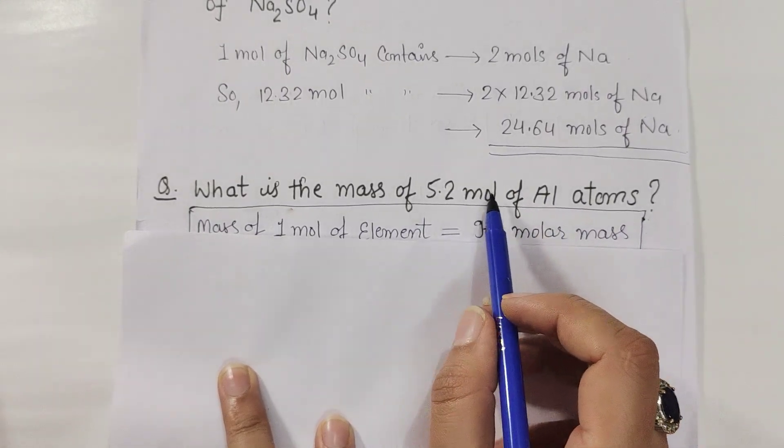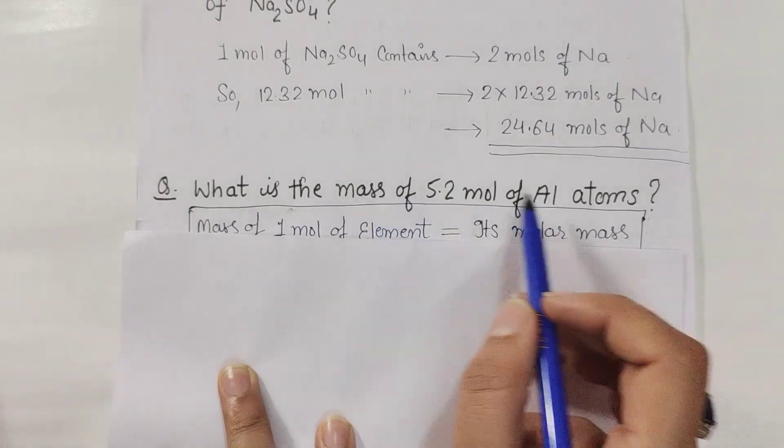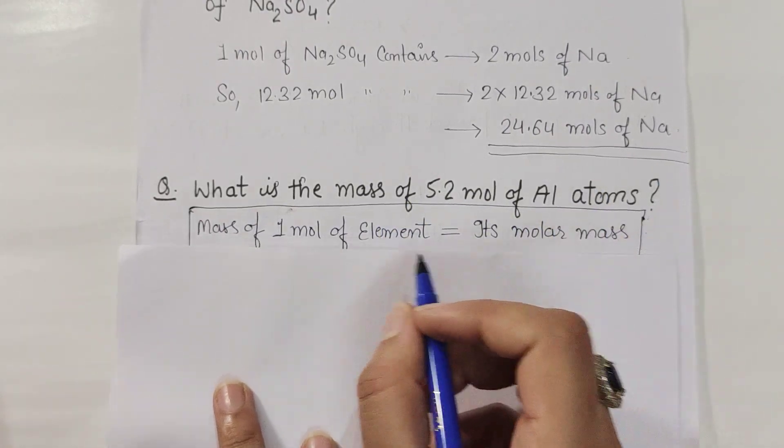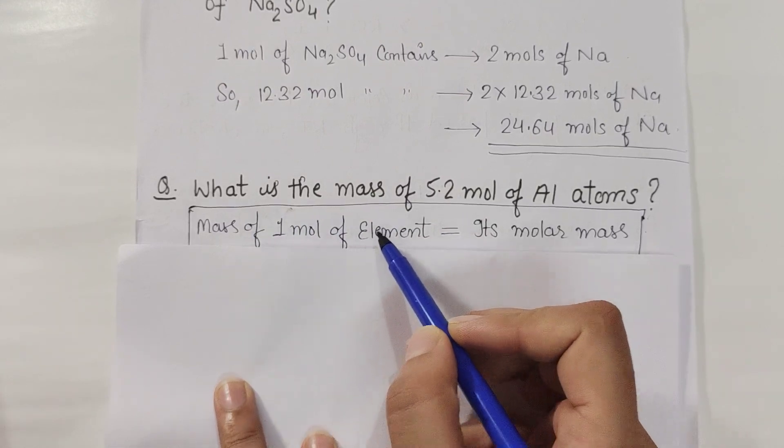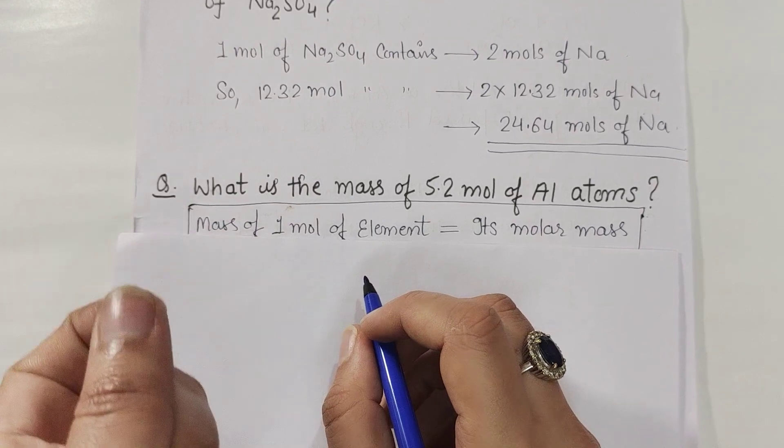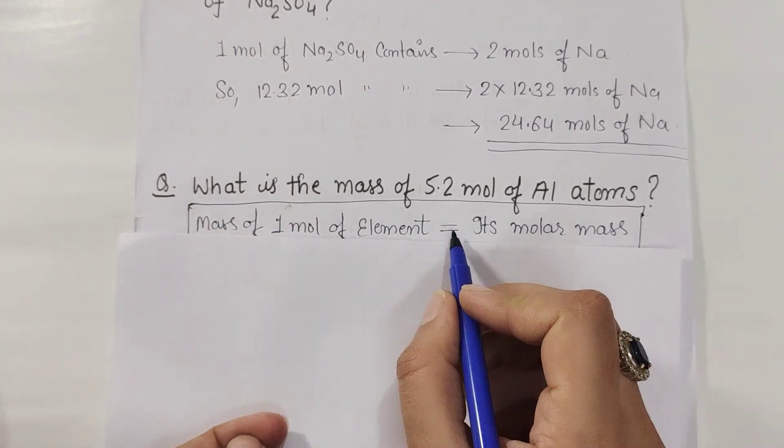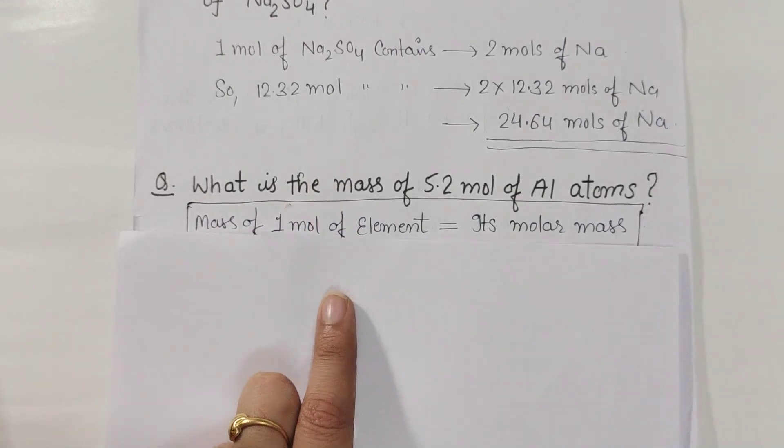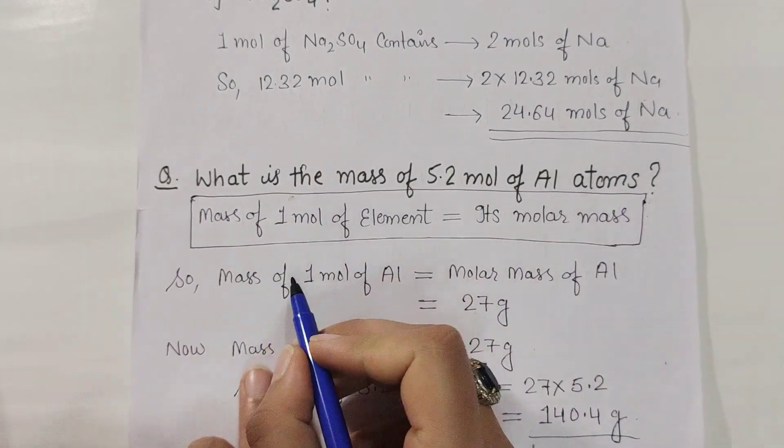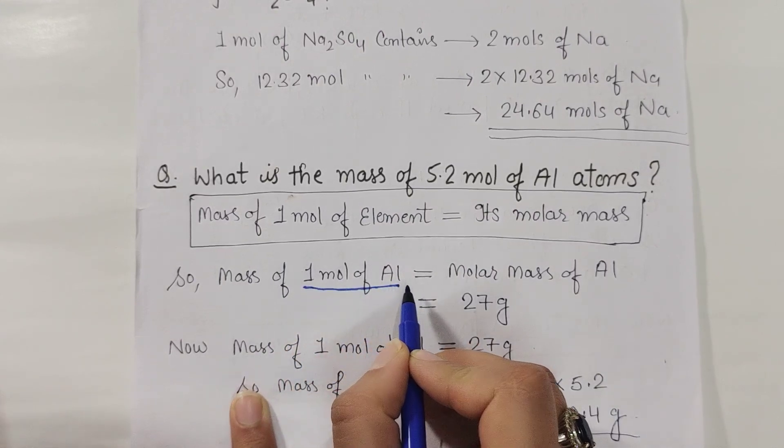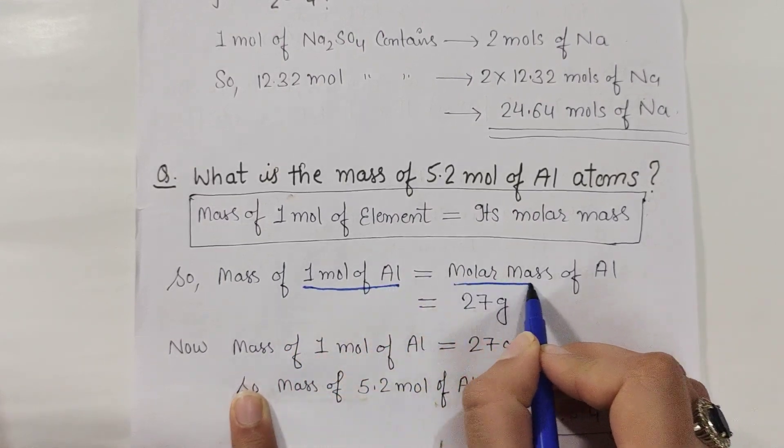So what are we going to do? You know that mass of one mole of aluminium equals to molar mass of aluminium.